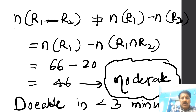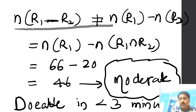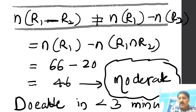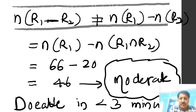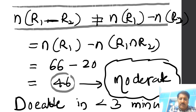Now I calculate n(R1 − R2). Remember, it is not directly n(R1) − n(R2). The correct formula is: n(R1 − R2) = n(R1) − n(R1 ∩ R2) = 66 − 20 = 46. So the number of elements in R1 − R2 is 46.